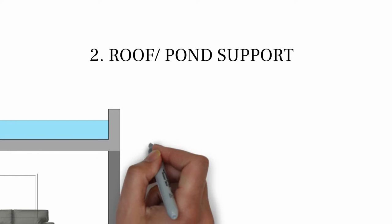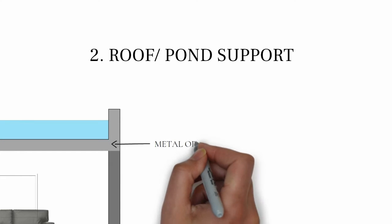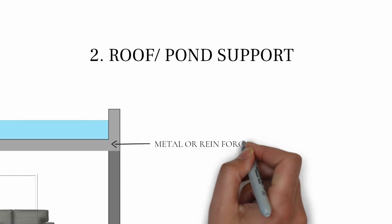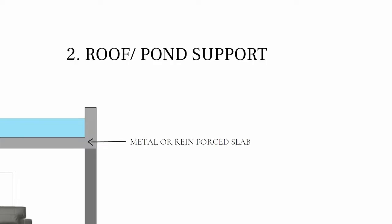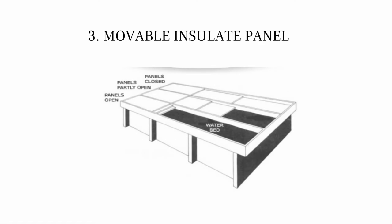The pond support should have high thermal conductivity which easily transfers the heat. It can be metal or reinforced slab. Moveable insulate panels help to cover the water bags.